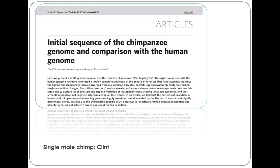This subject really came of age with the paper 'Initial Sequence of the Chimpanzee Genome and Comparison with the Human Genome,' published in Nature back in 2005. The genome was that of a single male chimpanzee called Clint, after Clint Eastwood. It presents the draft genome sequence of the common chimpanzee, giving a complete catalogue of changes: 35 million single nucleotide changes, 5 million insertion-deletion events, and various chromosomal rearrangements.